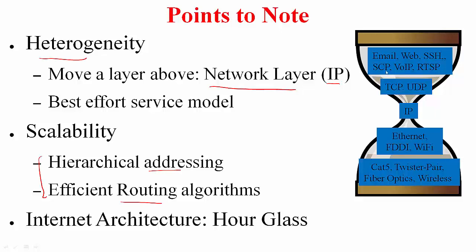If you see the internet architecture, it has this hourglass shape where you have many protocols at the application layer. At the transport layer also there are a few protocols—TCP, UDP, and some real-time application protocols. At the network layer there is one common protocol, IP, that interconnects the different networks. Again at the link layer you see more protocols, and at the physical layer also you see many protocols. So many protocols above and below, but one common protocol in the middle.